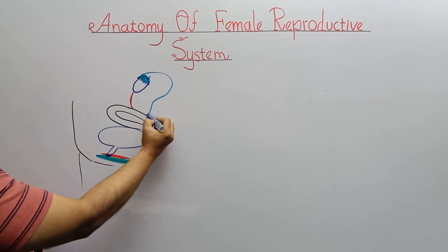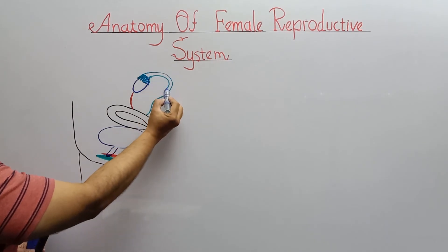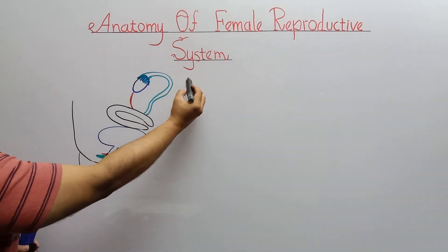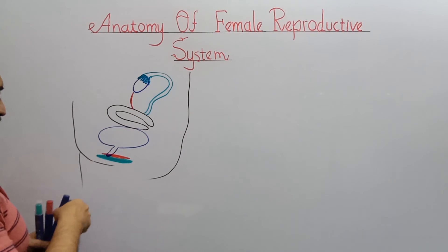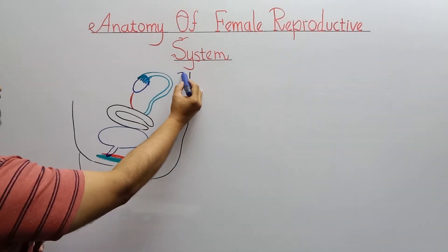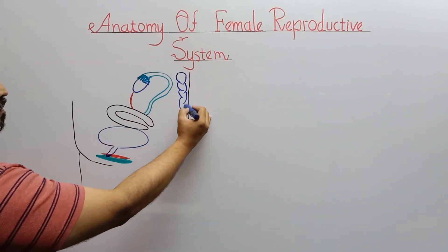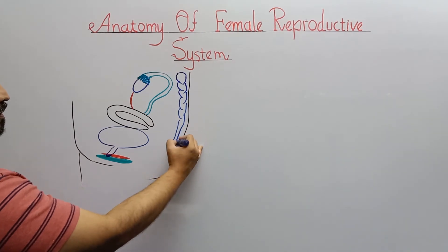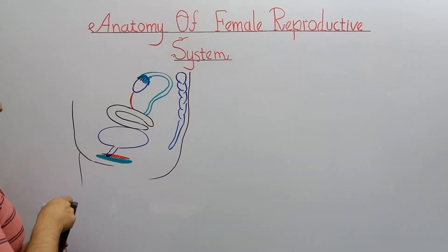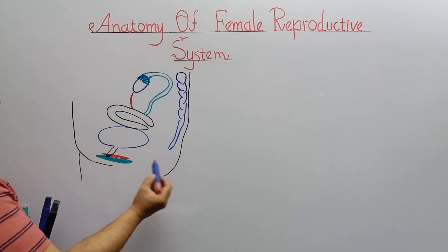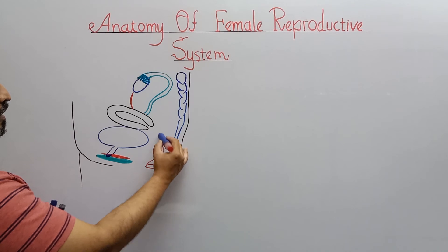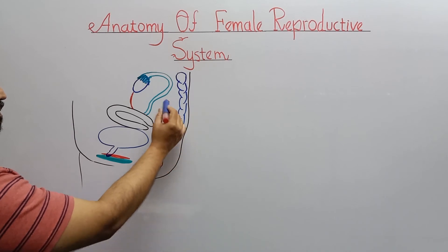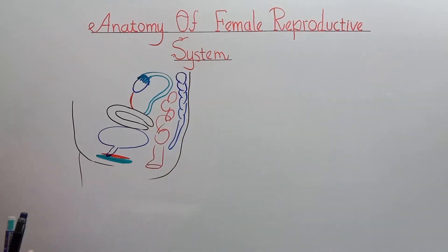Here is the fimbriae, which is the first part of the fallopian tube, and then there is the fallopian tube, which opens into the uterus. Here are present other systems: the vertebral column, the digestive tract, the anus, and the rectum. This is a lateral view of the human female reproductive structure.